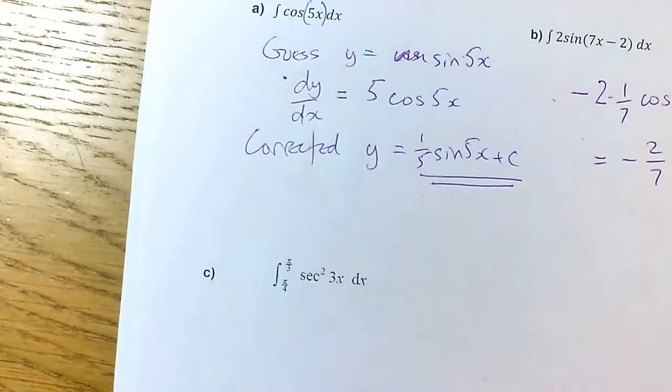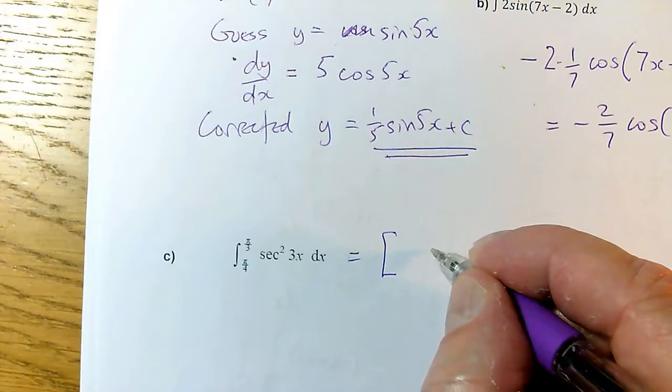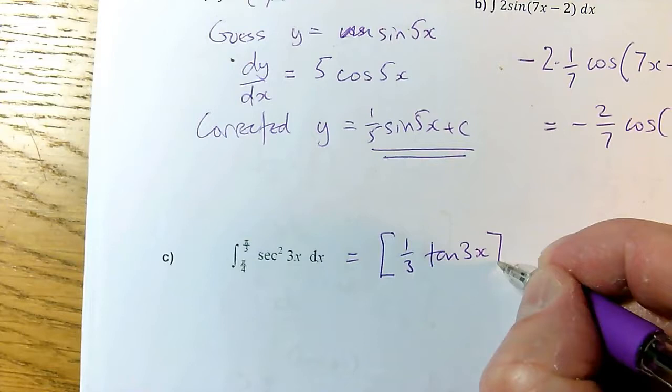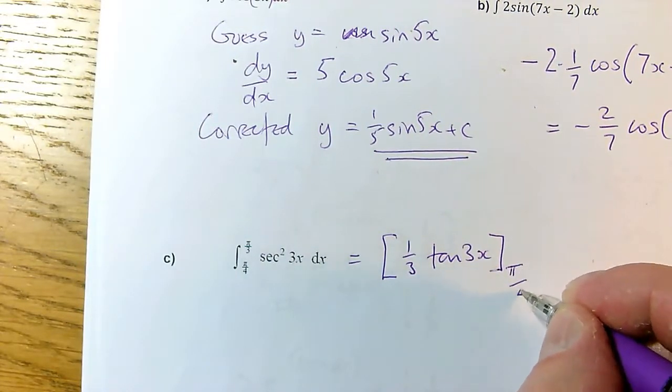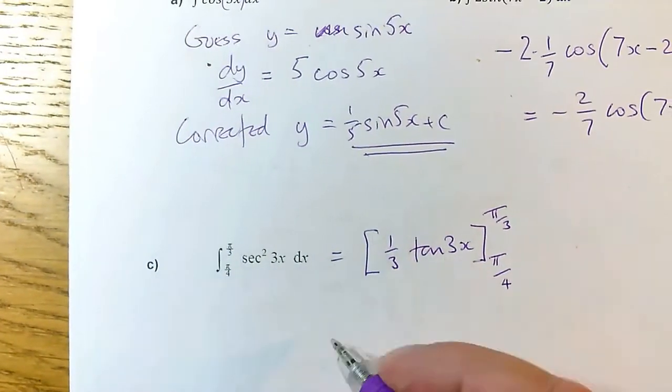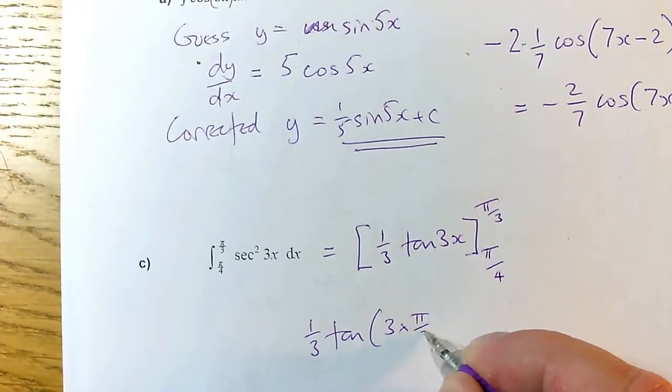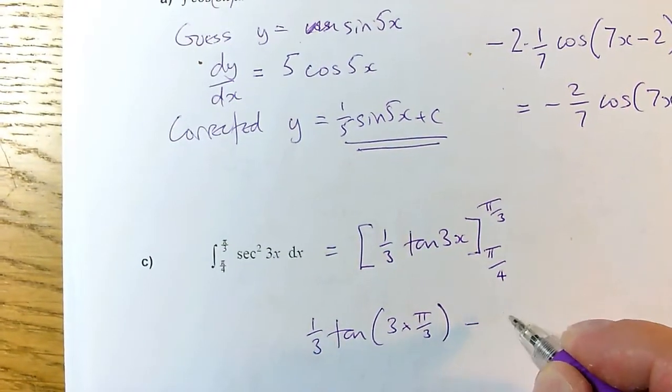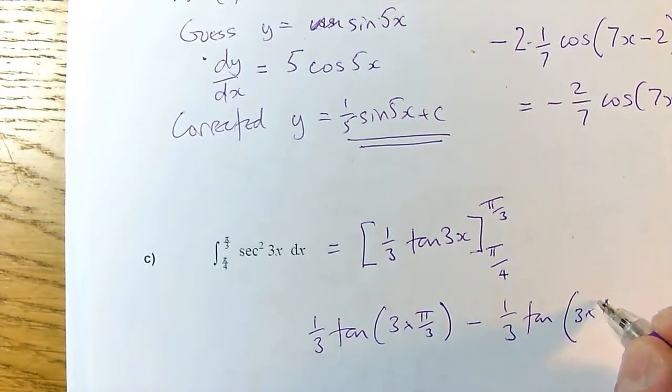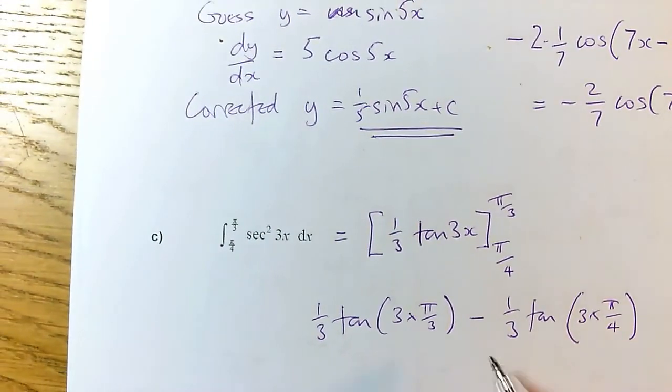For the one that we were doing, we've just got sec squared of 3x. And so the rule from the formula book tells us that that's going to be tan of 3x with a 1 over 3 popping out in front of it. And all I've got to do now is put in the limits, pi by 4 down here and pi by 3 up here. So I've got to put the top limit in first, 1 third tan of 3 times pi by 3 minus 1 third tan of 3 times pi by 4.